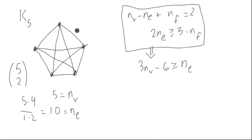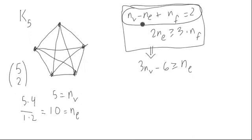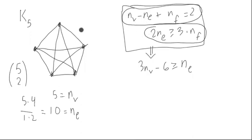In previous videos, we showed that if a graph is planar, then it satisfies this inequality. We also showed that a graph of this kind must satisfy this other inequality. So assuming this graph is planar, these two conditions follow as consequences. We're proceeding by contradiction: assume the graph is planar, and then these two things will be satisfied.